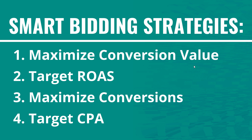Number three is maximize conversions — rather than telling Google Ads to maximize your revenue, you're telling it to maximize the total number of conversions your campaign is driving. Number four is target CPA, which refers to target cost per action. With that you're setting a target for the maximum you want to spend per conversion, essentially telling Google Ads to drive conversions for your business at ten dollars or less.